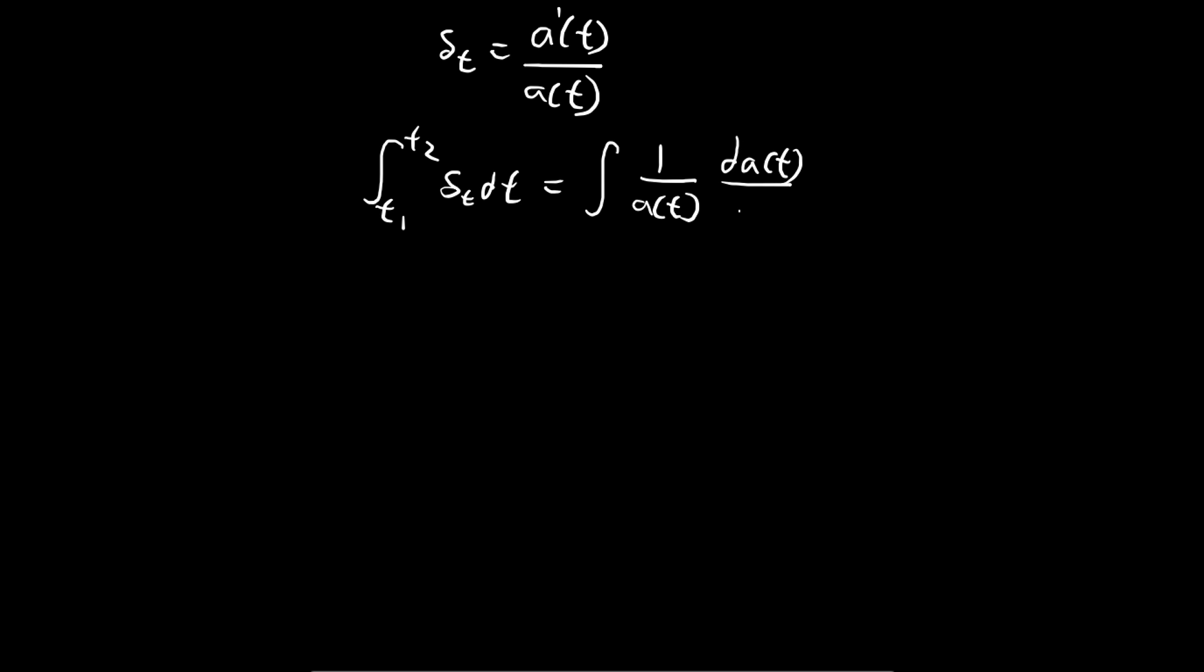Now A prime of t is just the derivative of A, from t1 to t2. Now 1 over A of t. So what's the next step?